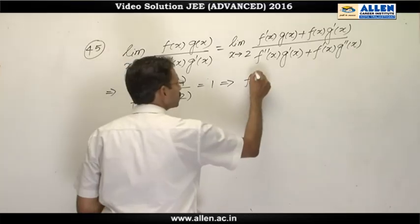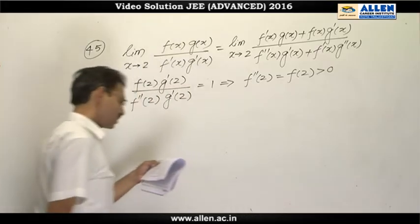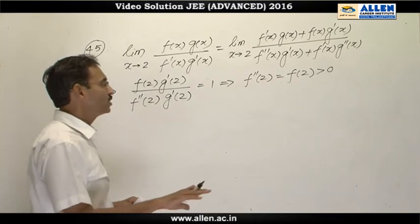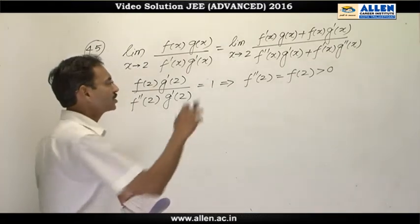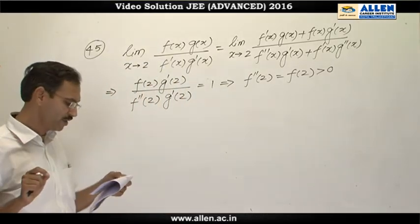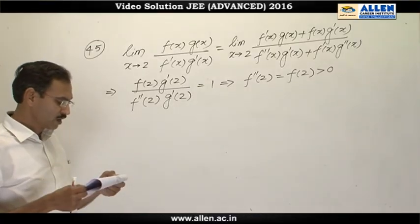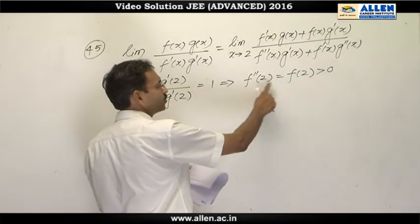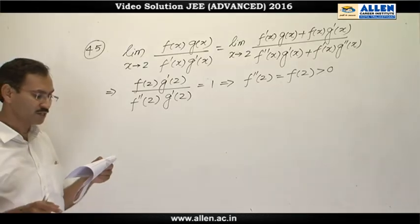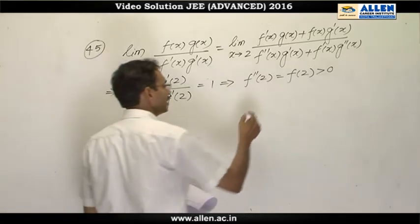Therefore, f double dash x is equal to f(2). And f(2) is positive as the co-domain of f is 0 to infinity, the positive real numbers. Now f dash 2 is 0 and f double dash 2 is positive. It means x equals to 2 is the point of local minima. So option A is right and therefore option B is wrong. And option C can be judged here. f double dash 2 is equals to f(2) not greater than. So C is wrong. And option D is correct because x equals to 2 is one of the root of this equation. That's why the correct answers are A and D.